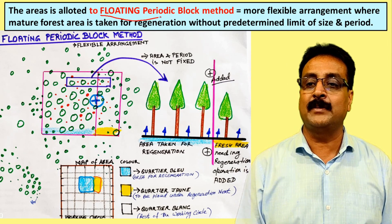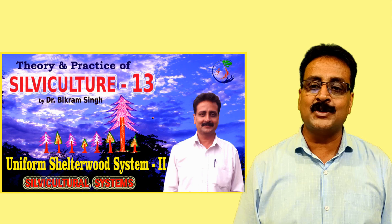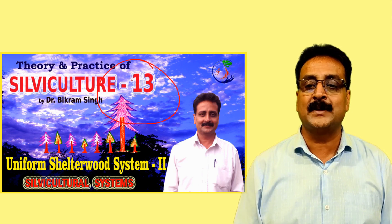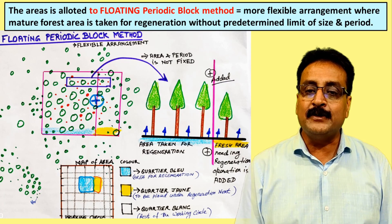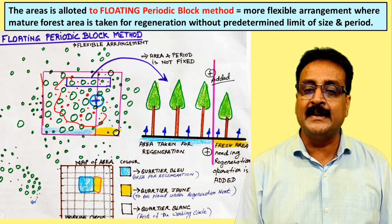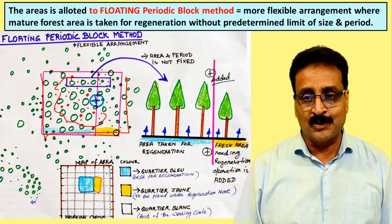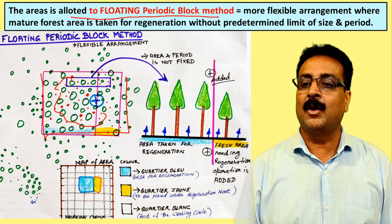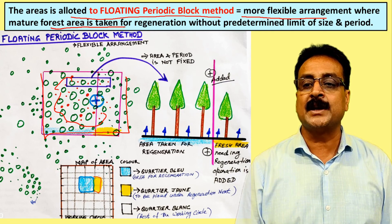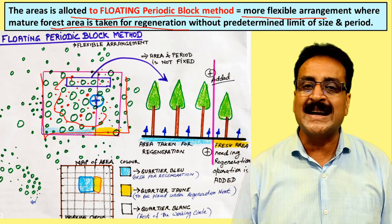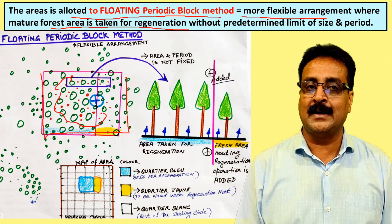The entire area is divided into floating periodic blocks. A floating periodic block is one where neither the area nor the period is fixed. Wherever regeneration is coming, we take that block. The area allotted to floating periodic blocks is more flexible in management, where the mature forest is taken for regeneration without a predetermined limit of size or period. That is why it comes under the Indian irregular shelterwood system.